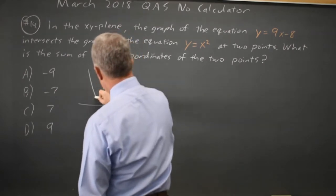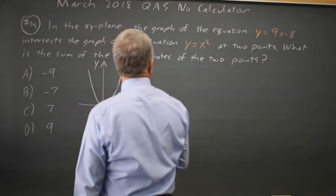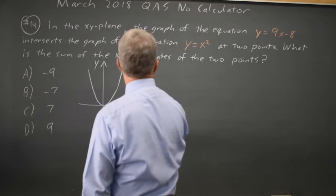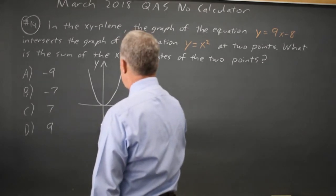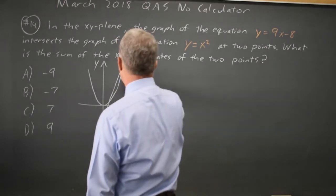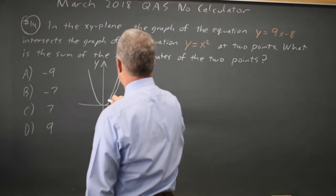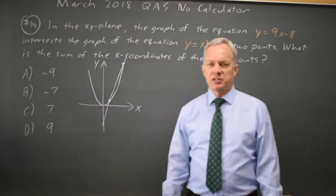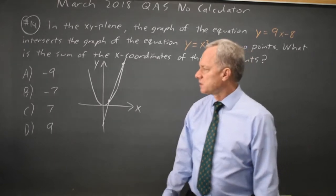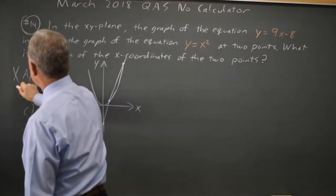We know y equals x squared looks something like this. We know y equals 9x minus 8 has a y-intercept at negative 8 and a steep positive slope. So the two points of intersection will have positive x values. We know it's not choices A or B.